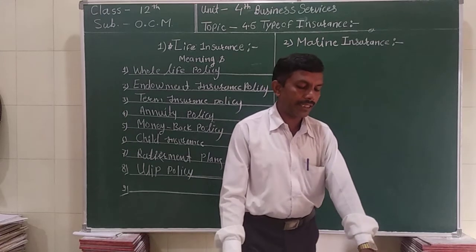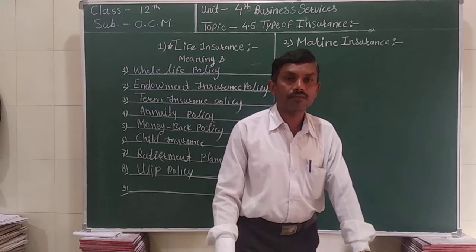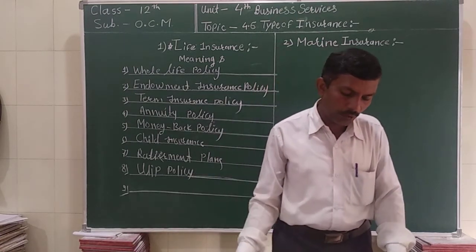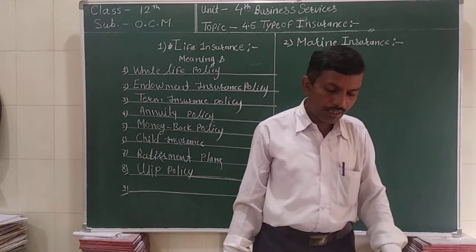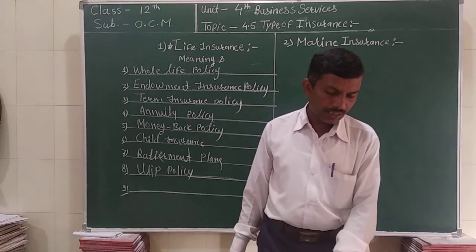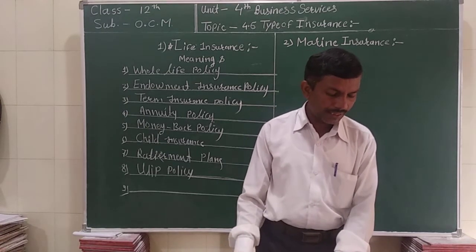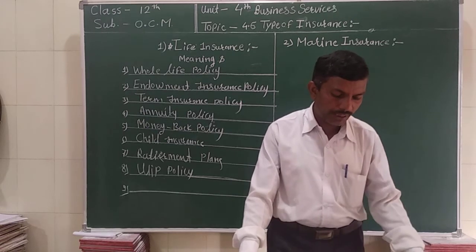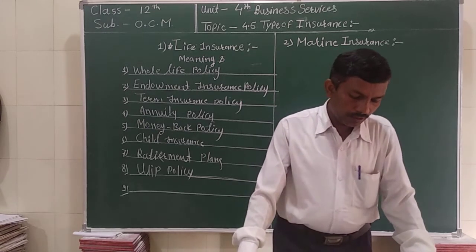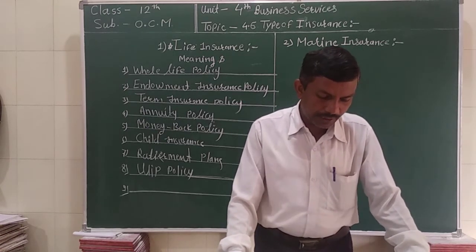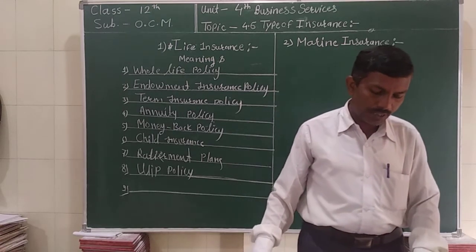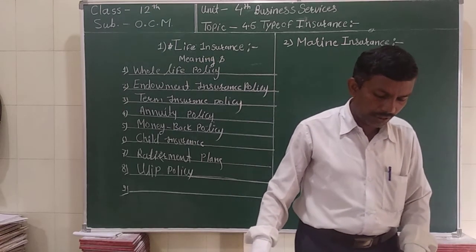The seventh type is the retirement plan. It is a savings and investment plan where the insurer accumulates funds during the policy period. A retirement plan collects funds at maturity and invests at a general rate in a regular income scheme, which can be referred to as a pension or annuity.